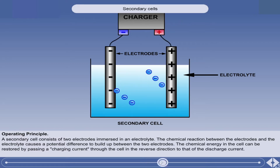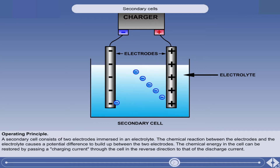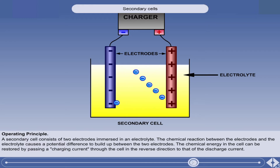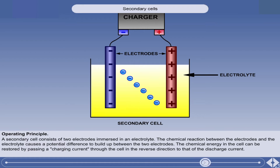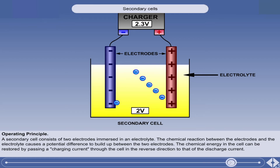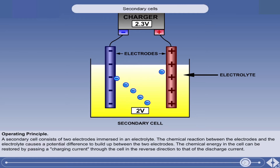The difference between a primary cell and a secondary cell is that in a secondary cell, the process can be reversed. The chemical energy in the cell can be restored, and the changes in the composition of the electrodes can be reversed by passing a charging current through the cell in the reverse direction to that of the discharge current. This current is forced through the cell by applying a potential slightly greater than the cell potential, in order to reverse the flow of electrons in the cell. In this way, the secondary cell can be discharged and recharged many times.